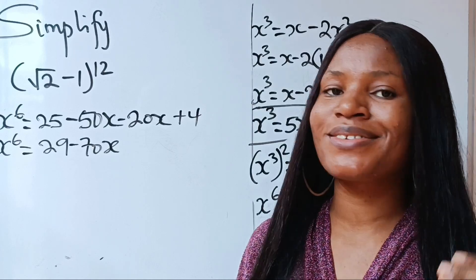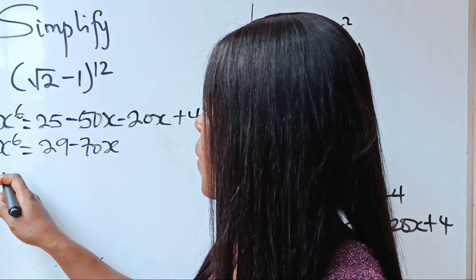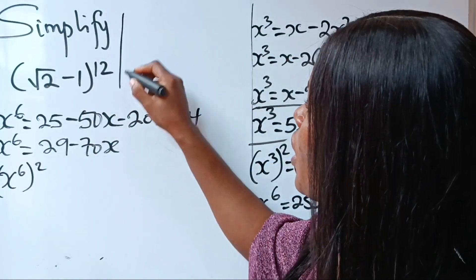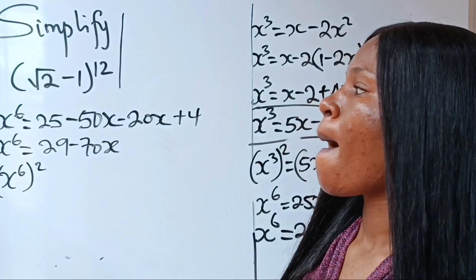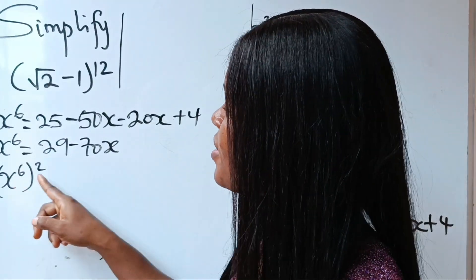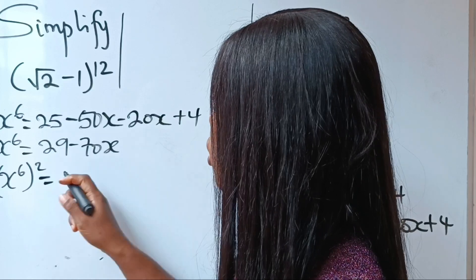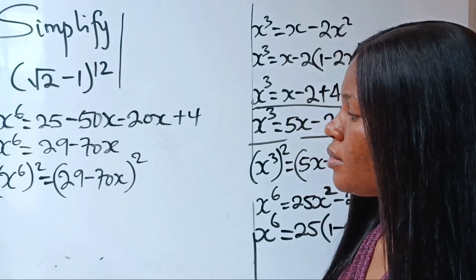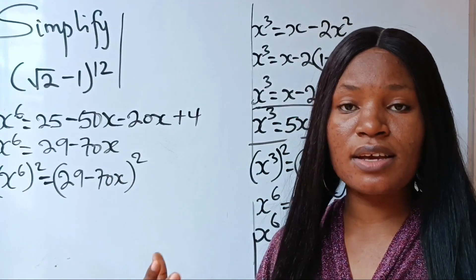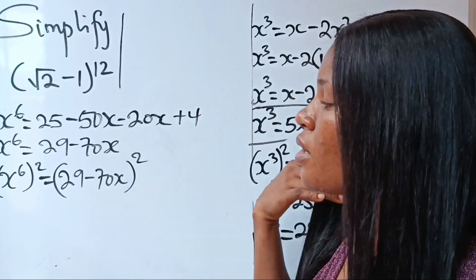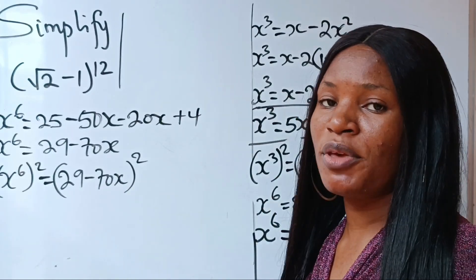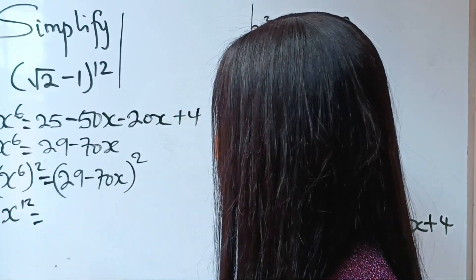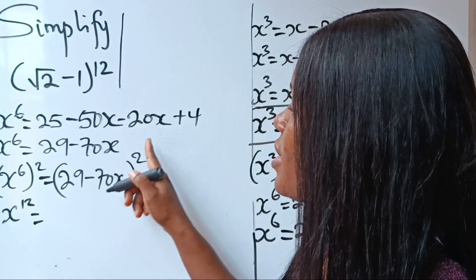Recall that when we square x to the power of 6, we get x to the power of 12. So (x^6)² = (29 minus 70x)² = x^12. We apply the algebra identity (a minus b)² = a² minus 2ab plus b², where a = 29 and b = 70x. So we need to compute 29 squared.